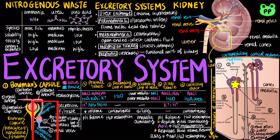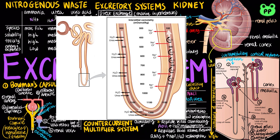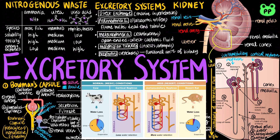The four steps of the excretory system consist of filtration in Bowman's capsule, reabsorption and secretion in the proximal and distal tubule as well as the loop of Henle, and finally excretion through the urethra. The countercurrent multiplier system expends considerable energy to maintain the osmotic gradient between the renal medulla and renal cortex, enhancing water reabsorption and producing concentrated urine. The system is largely driven by the loop of Henle and juxtamedullary nephrons. The vasa recta supply the kidney with nutrients without interfering with the osmolarity gradient. Mammals in dry environments have more juxtamedullary nephrons and longer loops of Henle, which contributes to water conservation.